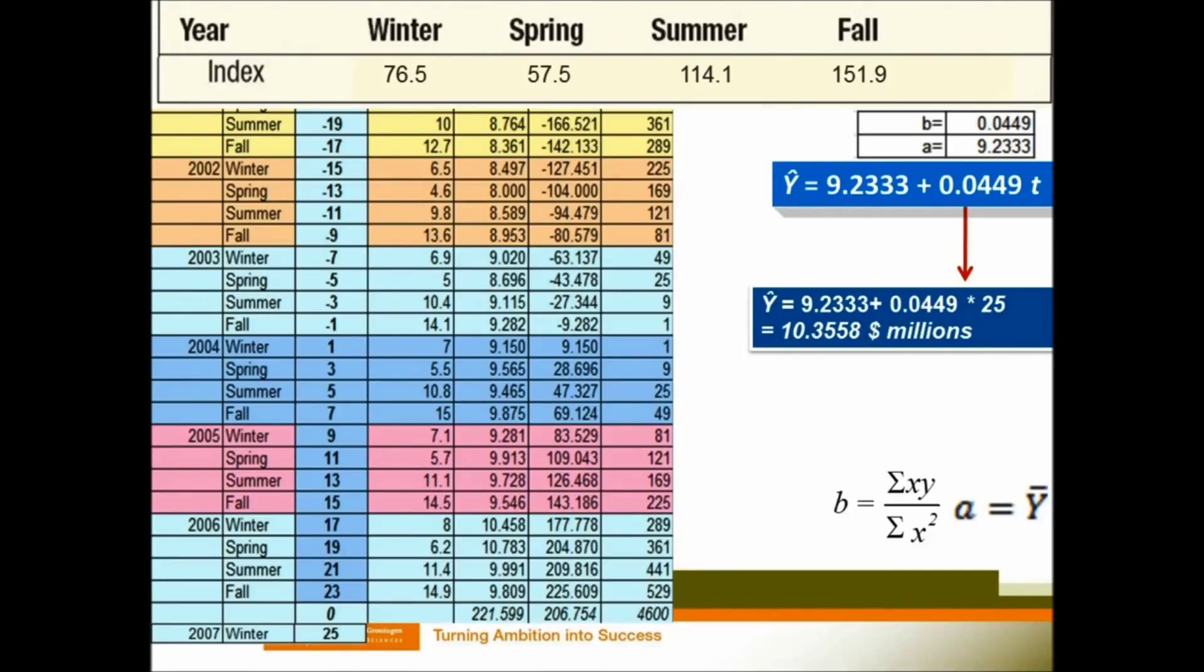We know that in winter, our sales will be 23.5% lower than the average quarter. Suppose our average quarter, the sales predicted is 10.36 million dollars. Then we use this number to times the winter index. Then that will be 7.92 million dollars. This is what we say the seasonalized prediction.